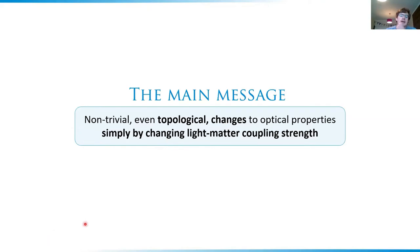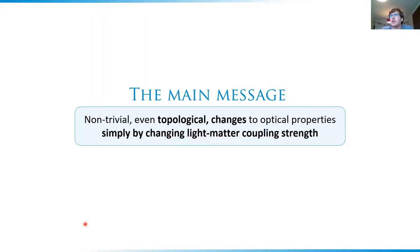The main message of my talk is that non-trivial, even topological changes to the optical properties of metamaterials can be realized simply by changing the light-matter coupling strength — for example, by changing the height of an enclosing photonic cavity. Normally when we think about inducing a topological transition, we change the parameters of the lattice or some symmetry of the lattice to get a different topological regime, but it is actually possible to induce topological transitions simply by changing the light-matter coupling strength.